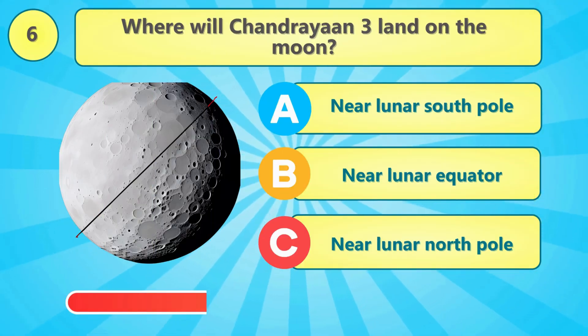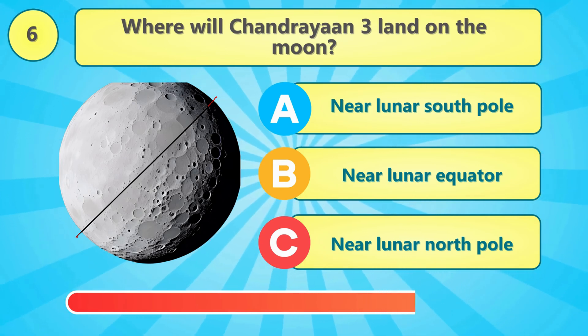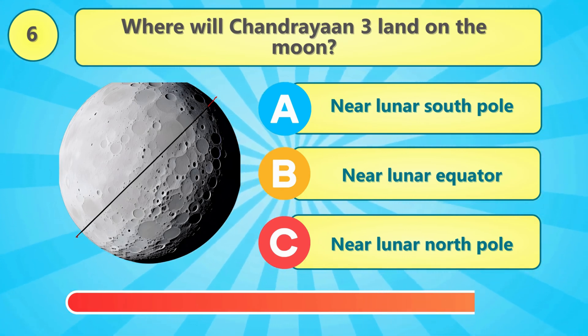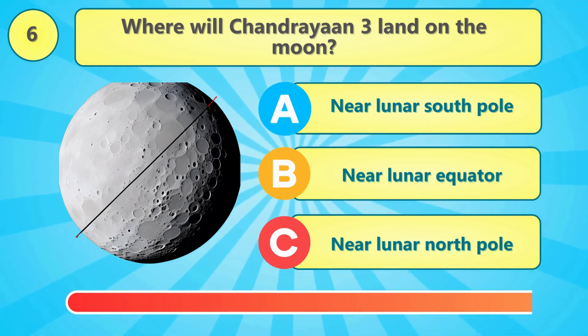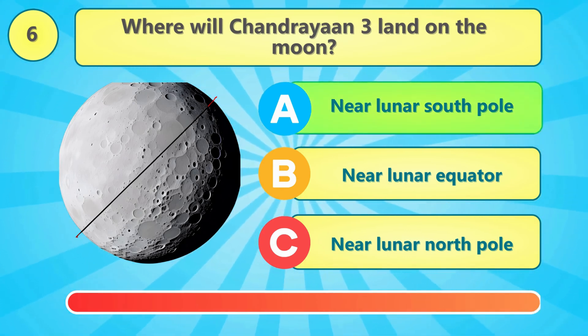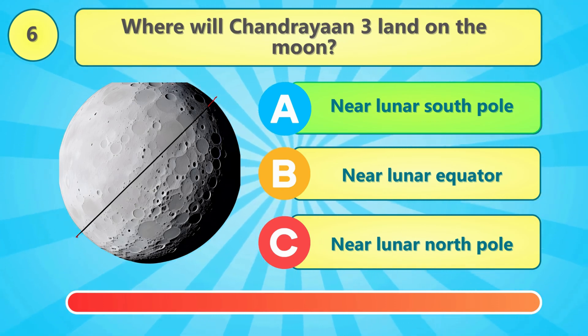Where will Chandrayaan 3 land on the moon? To land near the lunar south pole.